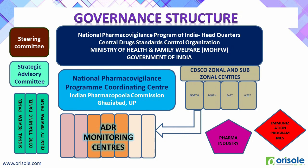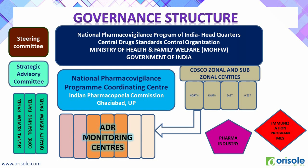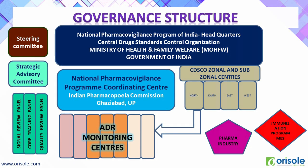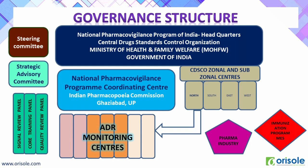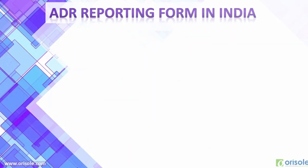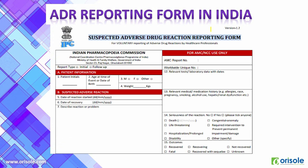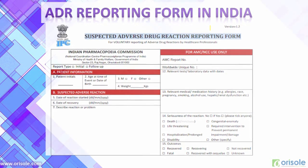This is the governing structure of pharmacovigilance in India — the National Pharmacovigilance Programme of India. It is under the Central Drug Standard Control Organization, under the Minister of Health and Family Welfare. It receives ADRs from ADR monitoring centers like medical institutes, research institutes, CROs, etc., through zonal and sub-zonal centers. It has different departments like a reviewing panel, strategic advisory committee, and steering committee, which analyze the ADRs and take necessary actions on the stakeholders. This is the formal ADR reporting form in India; the ADR reporting form may differ in different countries according to their specifications.